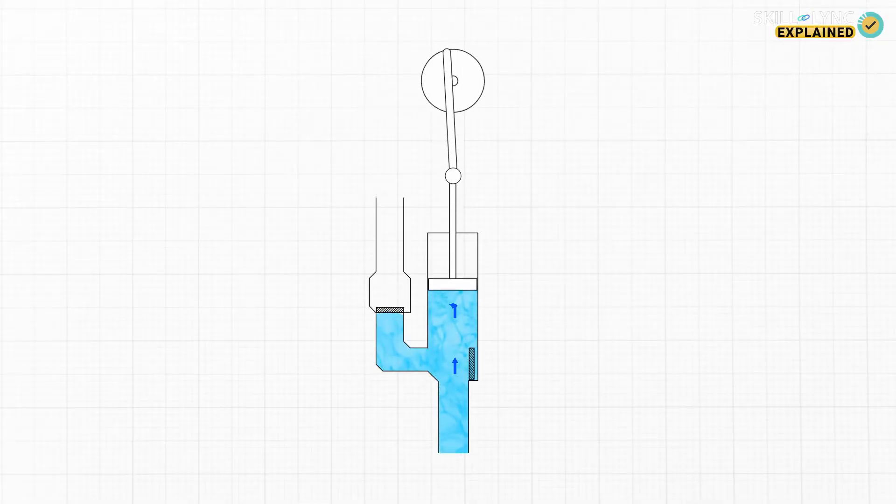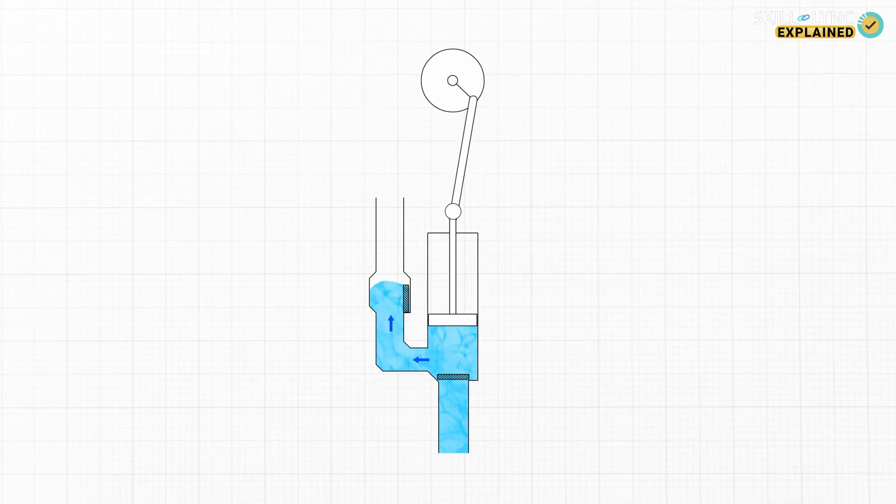But what if we could automate the whole thing? An automated reciprocating pump does the same job but much faster and the construction is also somewhat similar. In such pumps the two one-way valves are placed at an offset and the piston is operated using a crankshaft that is run by a motor.